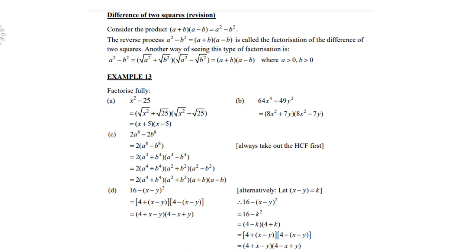Another way of seeing this type of factorization is that A² - B² is the same as (√A² + √B²)(√A² - √B²), which again gives you (A + B)(A - B). And of course, both A and B must be positive.